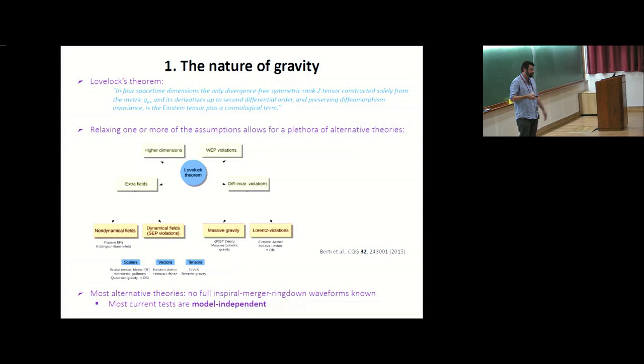On the theory side, there is something called Lovelock's theorem. In a nutshell what it says is that if you stick to four space-time dimensions, and you want the dynamics to be governed by the metric and up to second derivatives of a metric, but not any other field, then pretty much the only dynamical equations that you can write down are the Einstein equations with the possible inclusion of a cosmological constant.